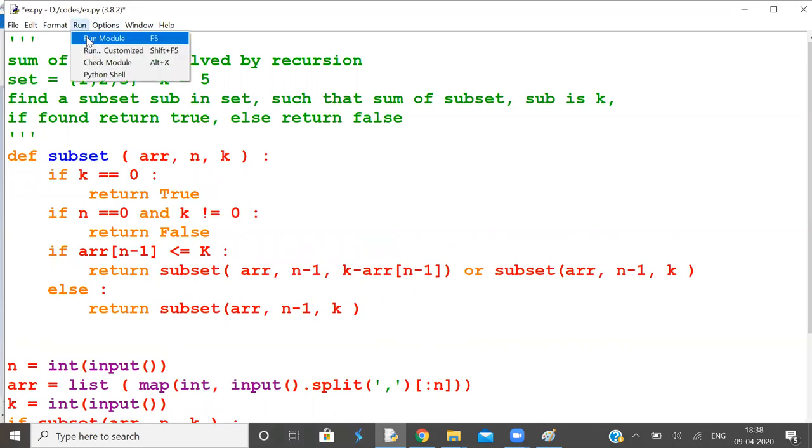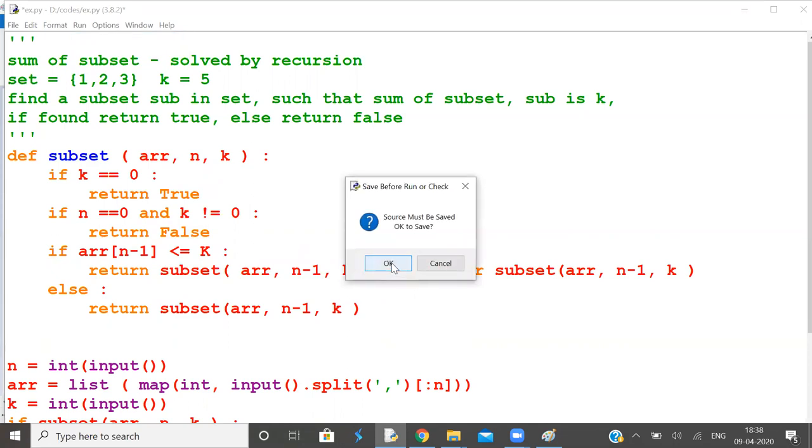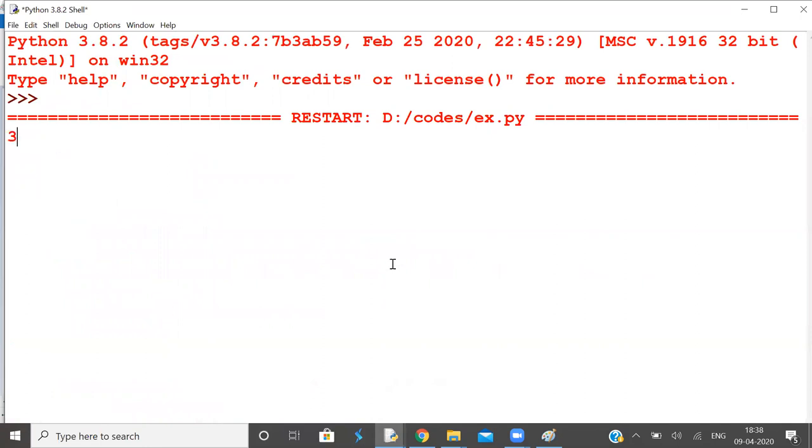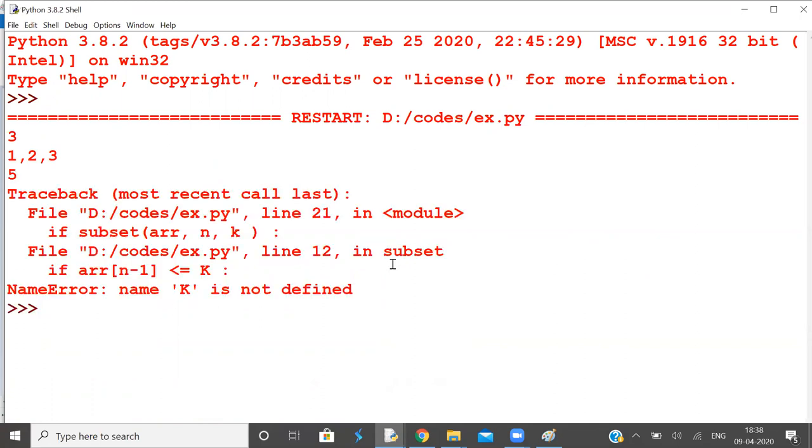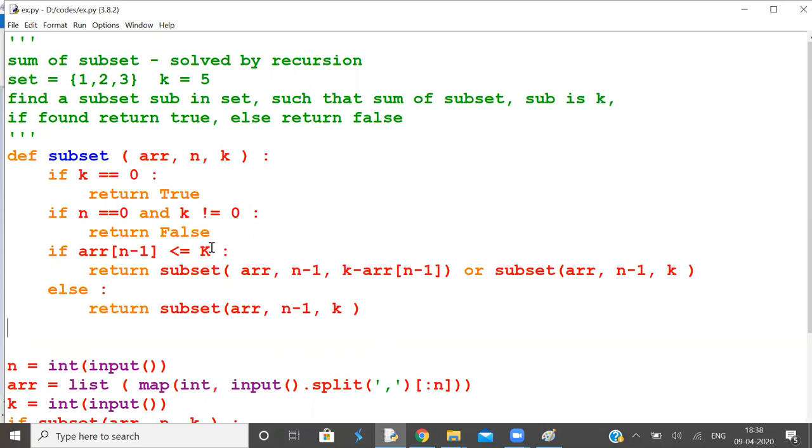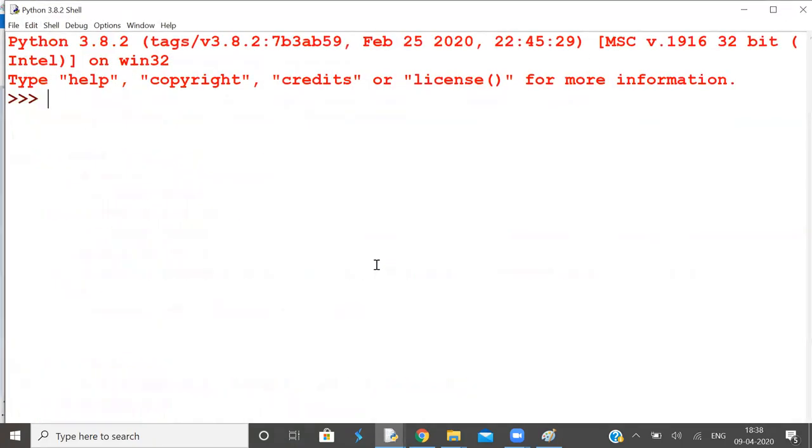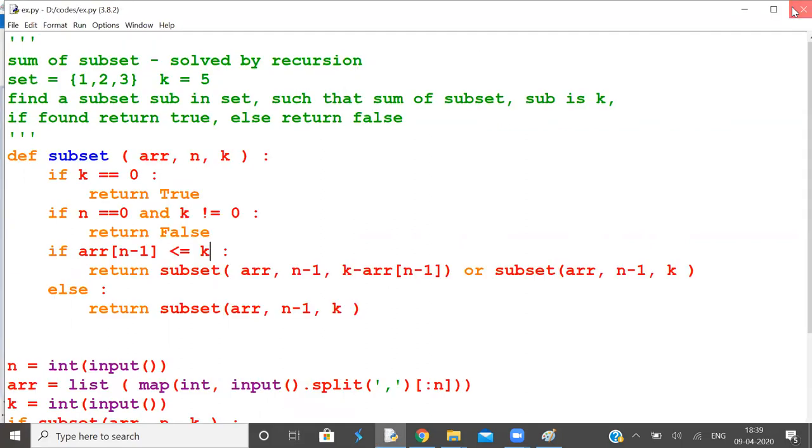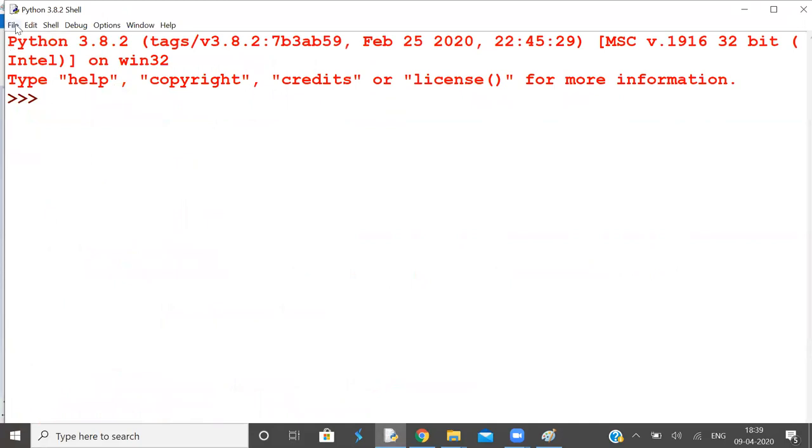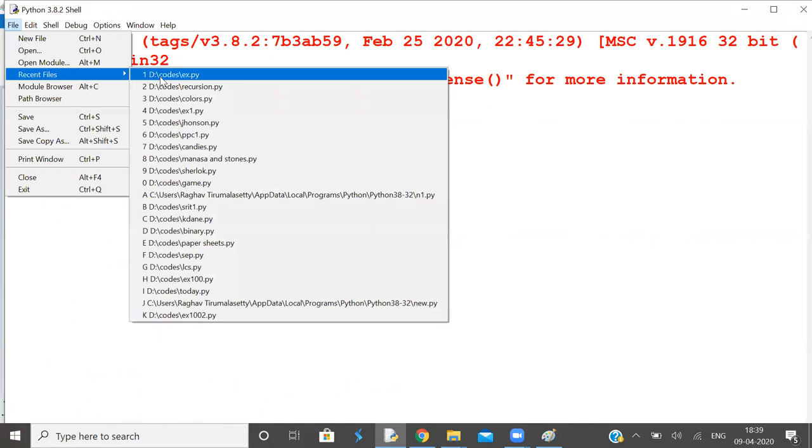So let us run this problem. Three inputs: 1 comma 2 comma 3, three elements, sum is 5. So again there is an issue with k - this is capital K. Now, three elements: 1, 2, 3, the sum is 5. Yes, subset is available. Let us try with other possible inputs to check the other part of the program.